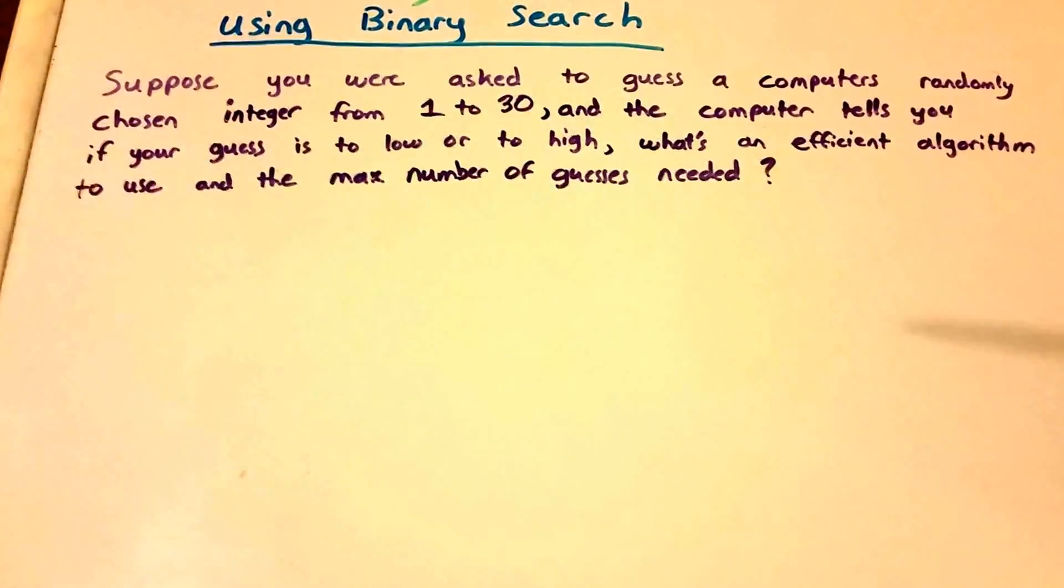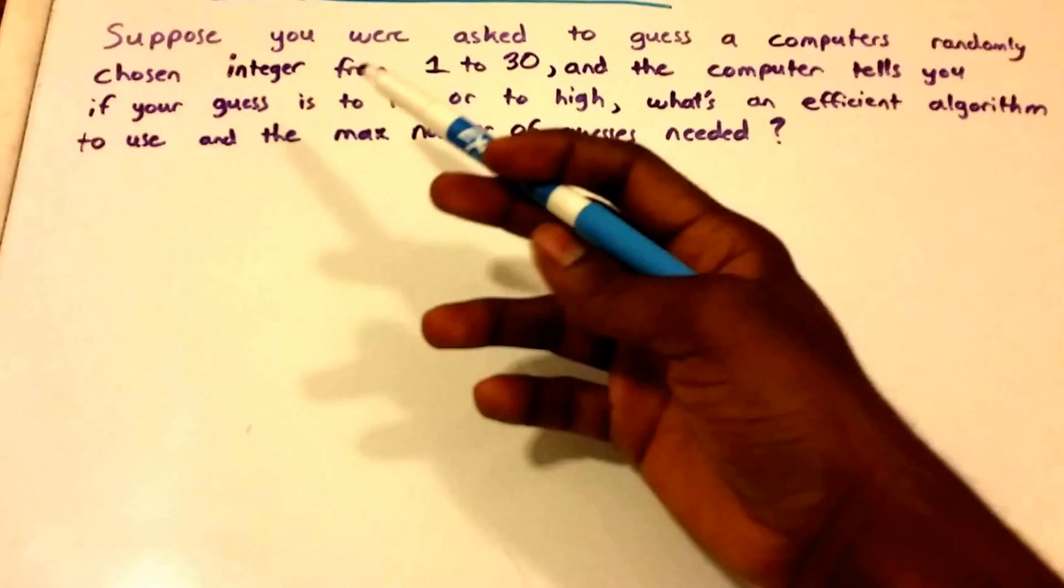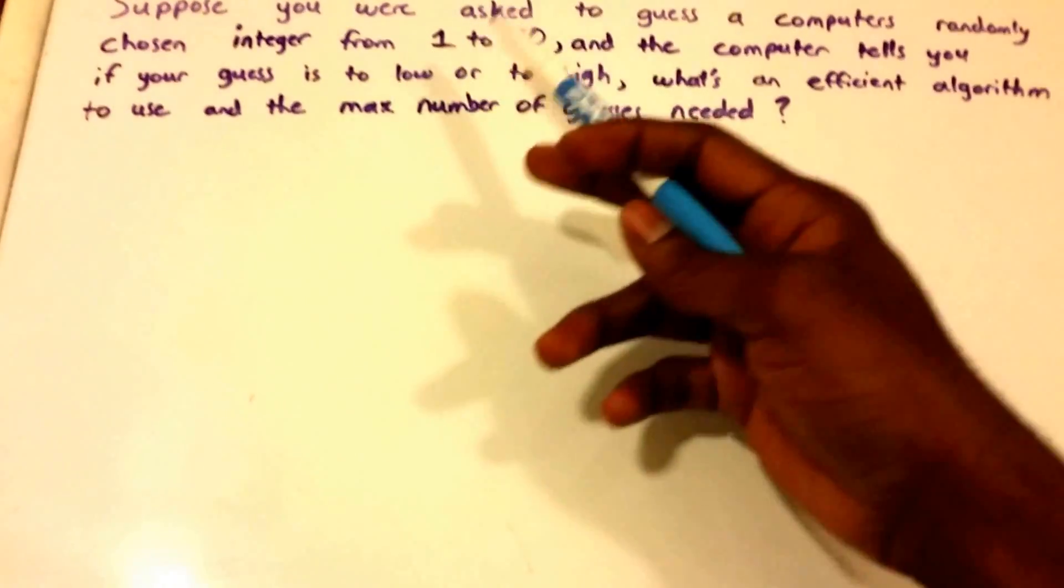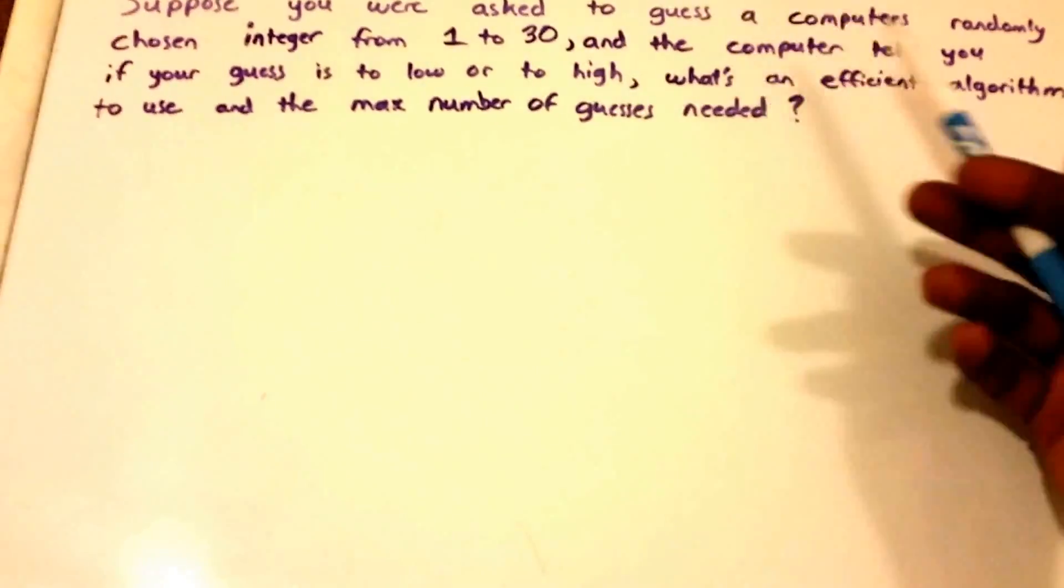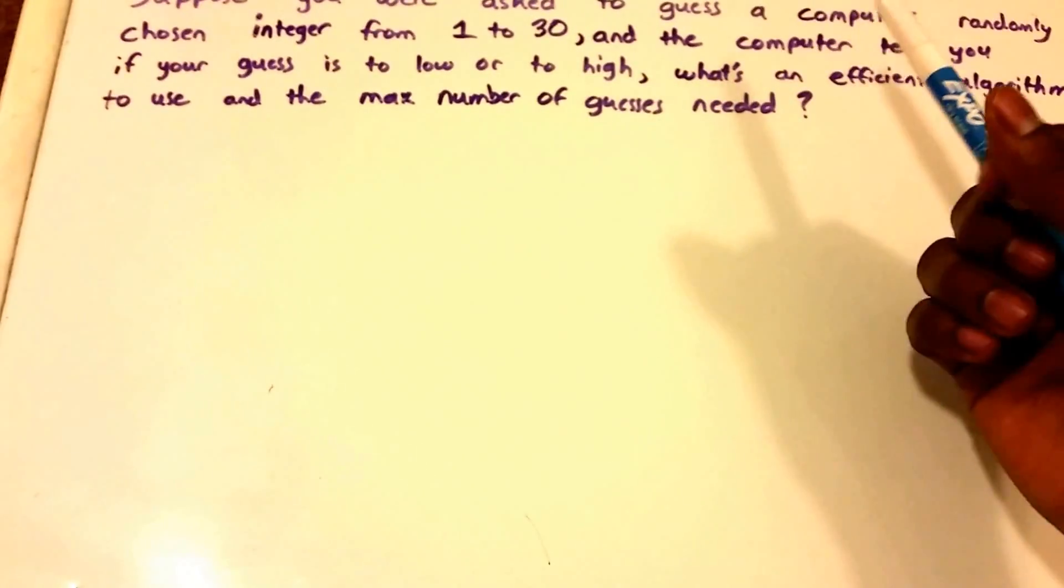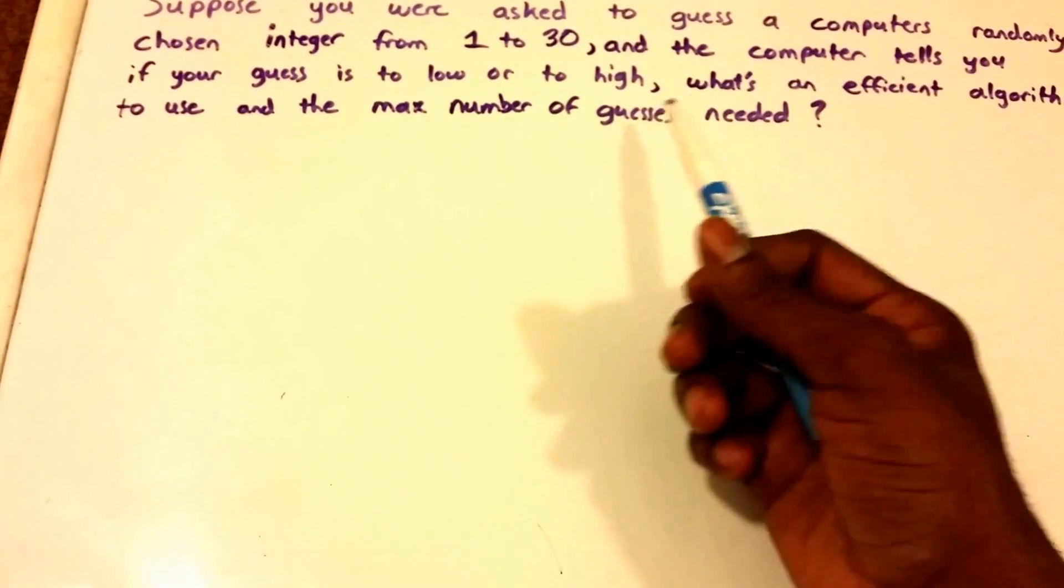Hey guys and welcome to this video on the guessing game using binary search. Suppose you were asked to guess a computer's randomly chosen integer from 1 to 30 and the computer tells you if your guess is too low or too high. We want to know what's an efficient algorithm to use and the max number of guesses needed.